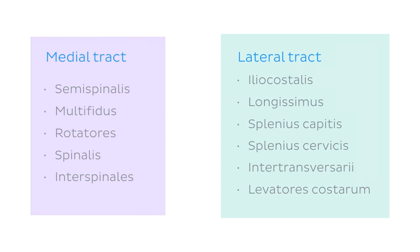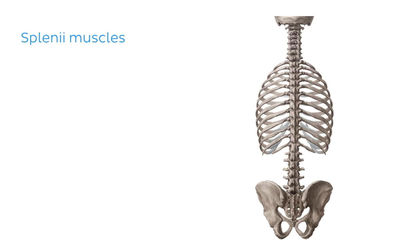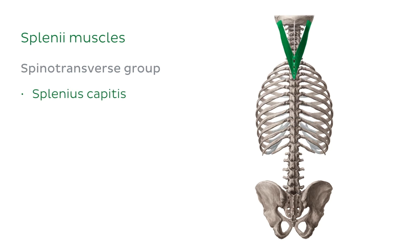So as we have a lot to cover, let's begin with the superficial layer. The superficial layer of the intrinsic back muscles is made up of the spinotransverse group of muscles, which itself is made up of two muscles: the splenii muscles, which are the splenius capitis and the splenius cervicis.